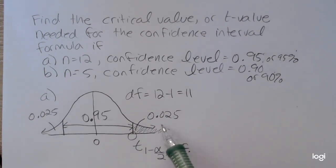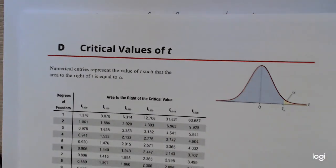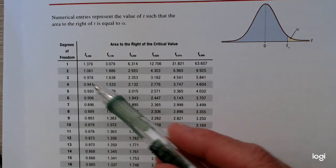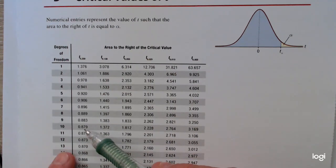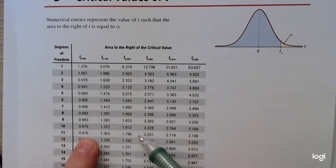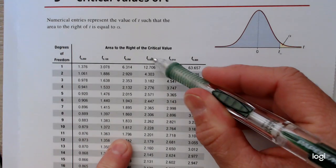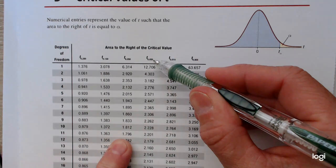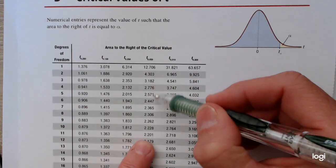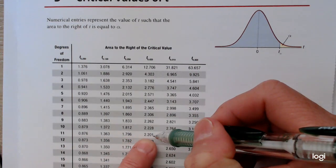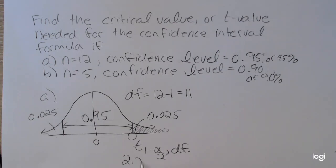So I want to read down to my degrees of freedom, which is 11 in this case, and over to the column that corresponds to 0.025. So again, the print is very small. So here, this says t sub 0.025. So intersecting that row and that column, I get a value of 2.201. So 2.201 is my critical value for this first one.